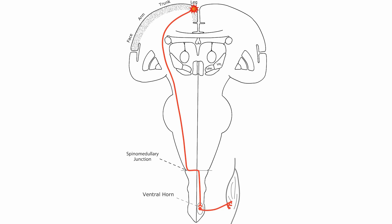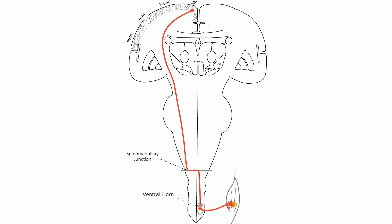Upper motor neuron diseases are characterized by spasticity or a change in muscle tone, increased deep tendon reflexes or hyperreflexia, and loss of voluntary control. Lower motor neuron diseases are characterized by areflexia — a loss of reflexes.